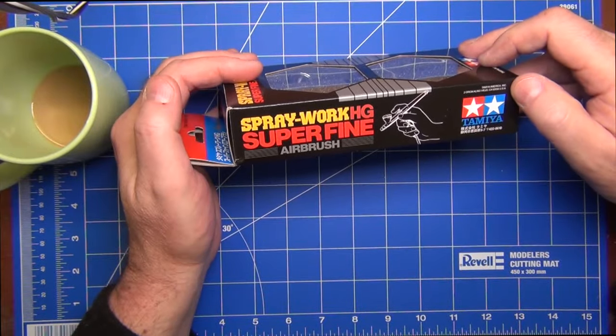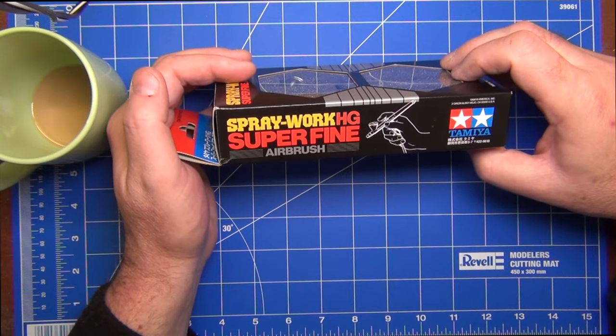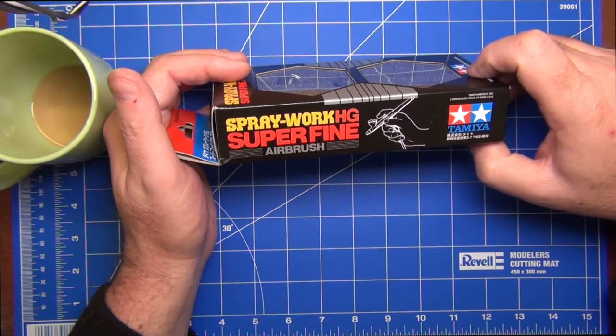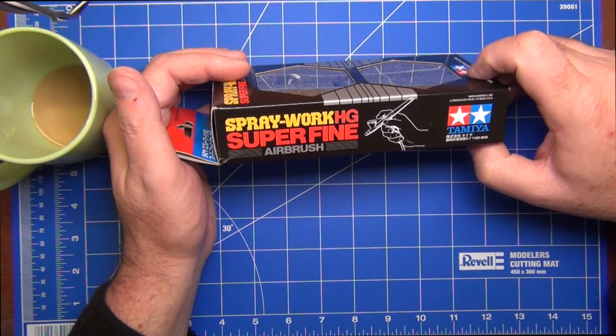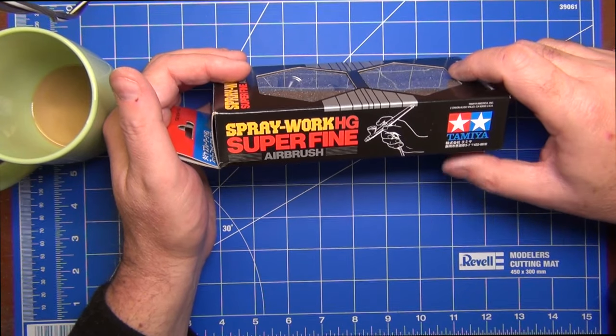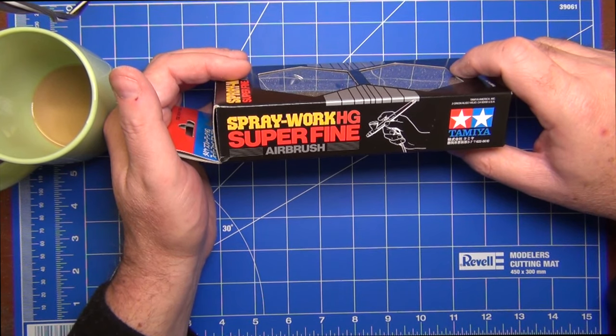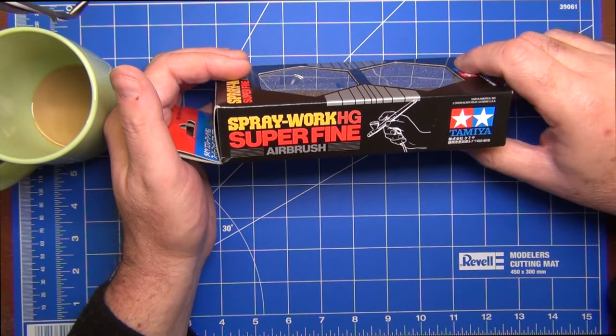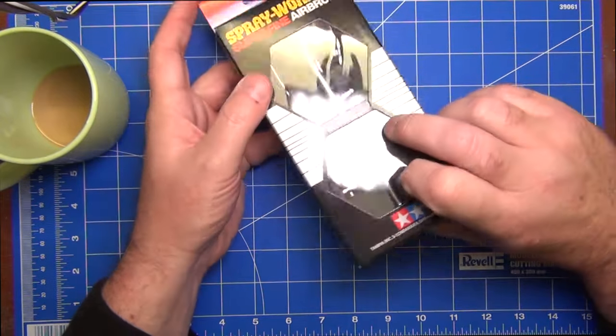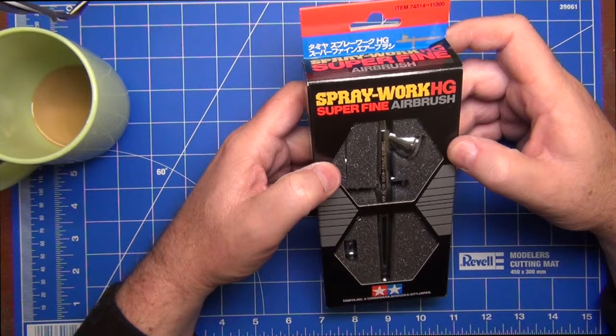On the side we can see it's got Spraywork HG Superfine made in Japan. On the other side we have the Tamiya America incorporated address, which suggests this airbrush is intended for the US market. Here in Australia where I'm doing this review you just can't buy these over the counter - they're not sold by the importer. I ordered this from Japan but it was actually shipped from California in the United States.